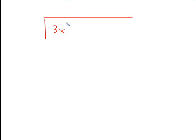Let's try another one — a slightly more complicated one. We have 3x cubed minus x squared minus 7x plus 6, divided by x plus 2. First, check: is the polynomial in standard form? Yes. Is it missing any terms? x cubed, x squared, x, and then 6 — no missing terms. So let's proceed.